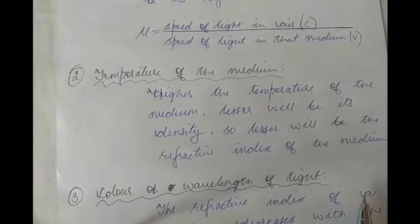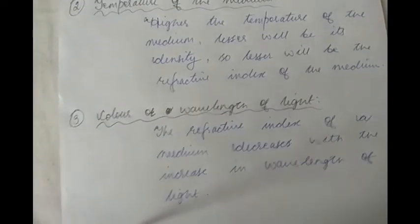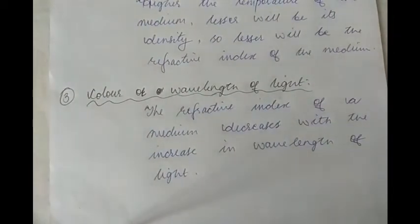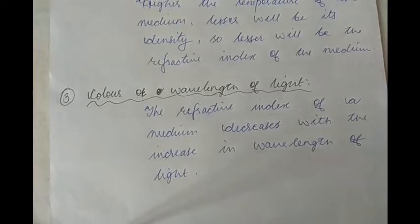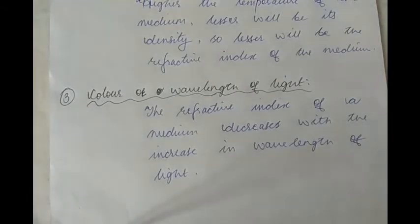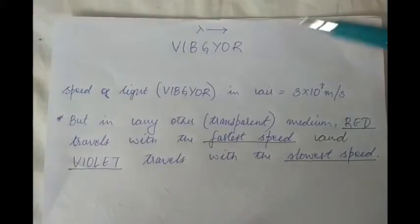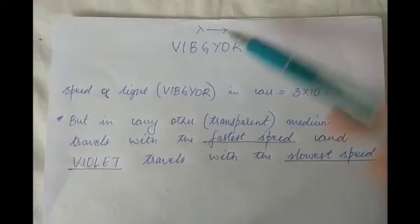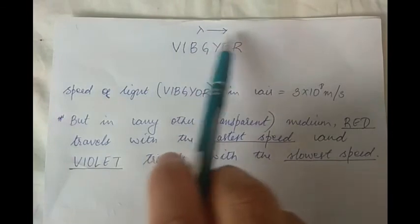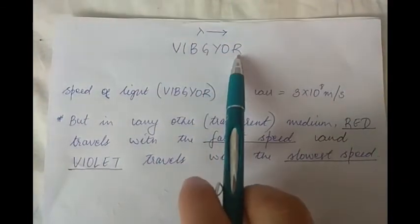The third factor is color or wavelength of light. Whenever we say light, we are referring to the visible spectrum — VIBGYOR: violet, indigo, blue, green, yellow, orange, and red. All of these colors of light have different wavelengths. The wavelength increases from violet to red, which means red color of light has the maximum wavelength and violet color of light has the shortest wavelength.